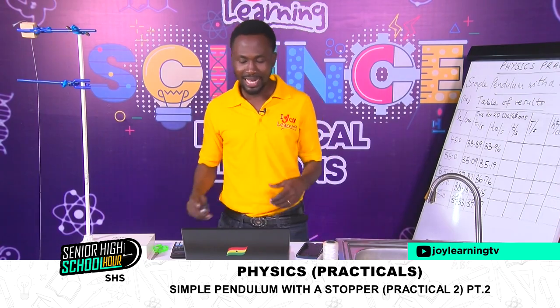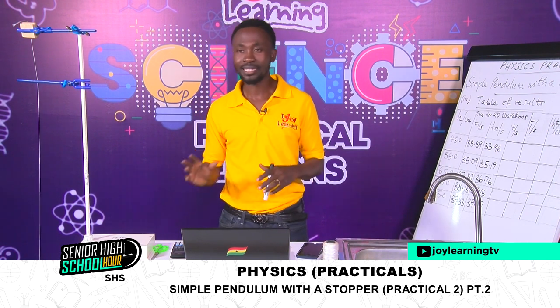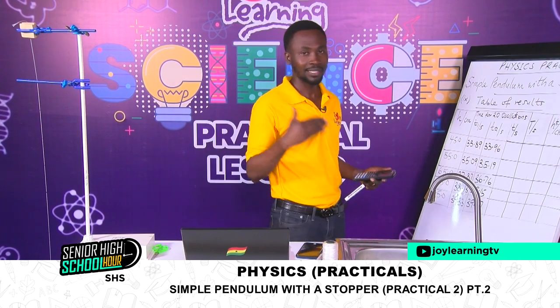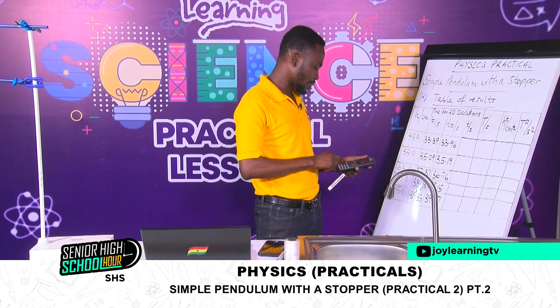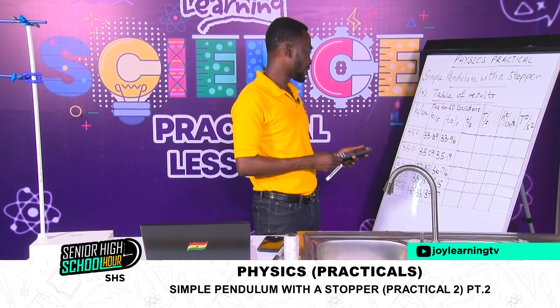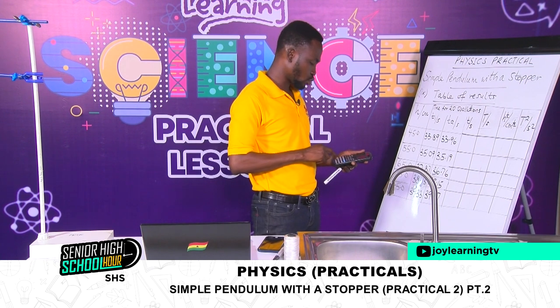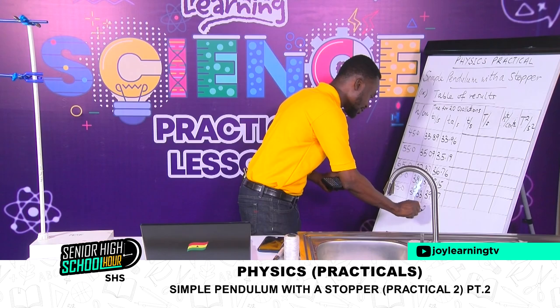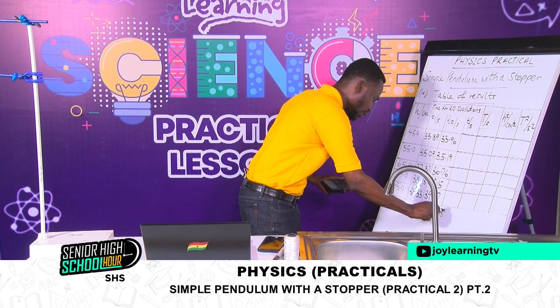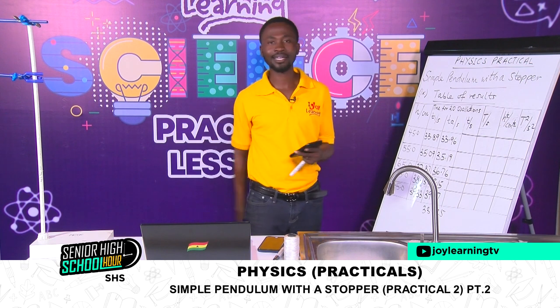The table comes from the question given to us. From the question, we are asked to find time for 20 oscillations, and this time should be the mean of the various times taken. We had 20 oscillations, and for each of them we had time 1 and time 2 for each length or height given to us. For the first one, we have 33.89 plus 33.96, divided by 2, giving me 33.925.